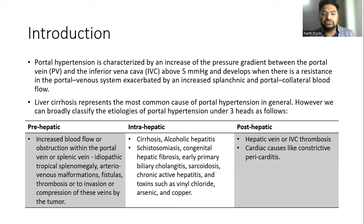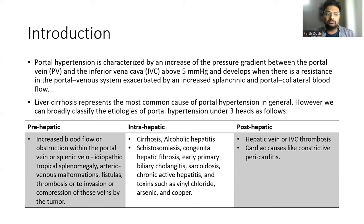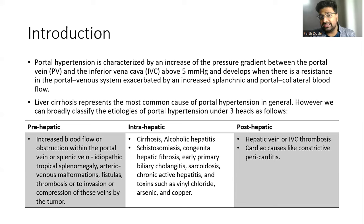Portal hypertension is characterized by an increase of pressure gradient between the portal vein and the inferior vena cava above 5 mm of mercury, and develops when there is a resistance in the portal venous system exacerbated by an increased splanchnic and portal collateral blood flow. Liver cirrhosis represents the most common cause of portal hypertension, and we can broadly classify the etiologies under three heads: pre-hepatic, intra-hepatic, and post-hepatic.